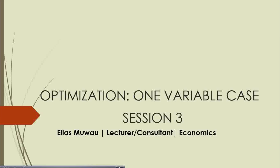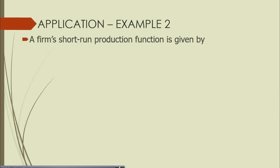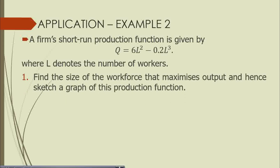In this video I will take you through example number two from optimization, and remember we are still looking at the one variable case. My name is Elias. The problem we are solving today: a firm's short run production function is given by q = 6L² - 0.2L³, where L denotes the number of workers. We are required to find the size of the workforce that maximizes output, and hence sketch a graph of this production function.